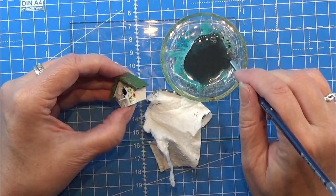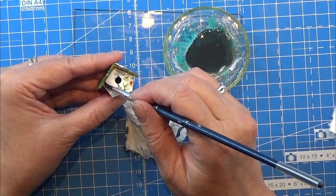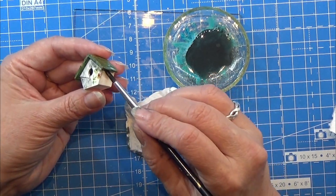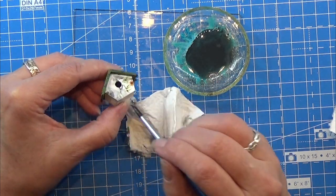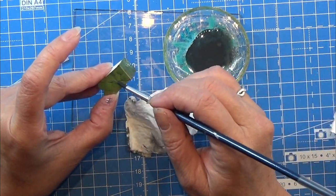It is better to do it light at first and then build it up than getting too much on there and trying to take it off like I had to do here. But you will have to try what works for you, and there you have a done birdhouse. I had a lot of fun with this. I hope you will have as well. Find the link in the info box below.